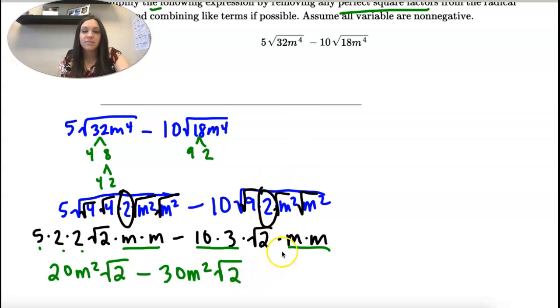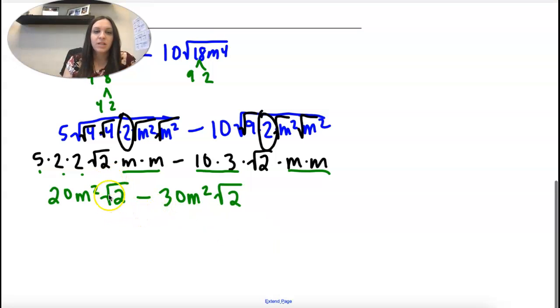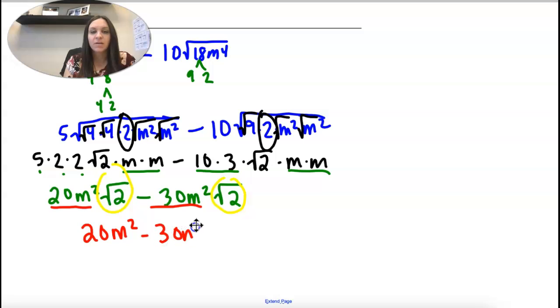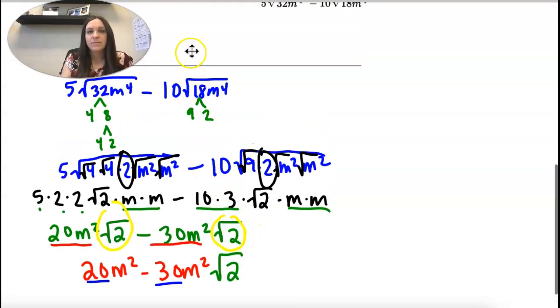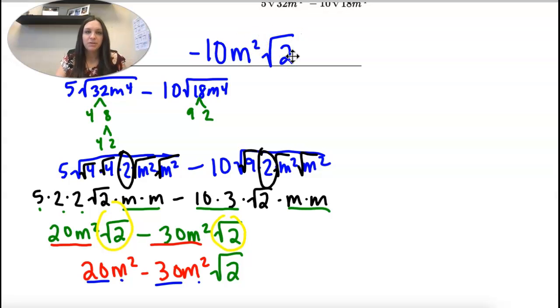Okay, now we're going to subtract. So, look. These are the same. That means I can subtract. So, I'm taking what's out front. 20 m squared minus 30 m squared. And then square root of 2 just comes along with it. So, 20 minus 30 is negative 10. And when we subtract things with variables, they just stay the same. So, it's still m squared. And it's still square root of 2.